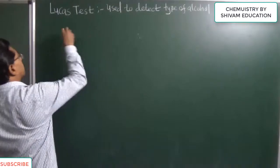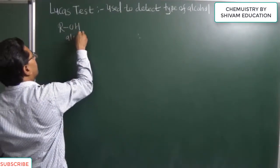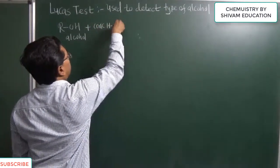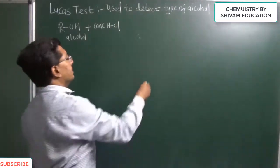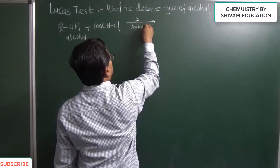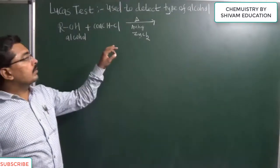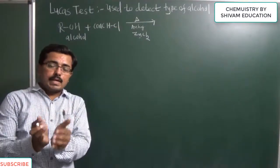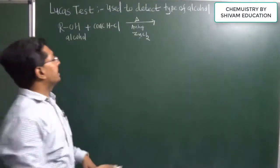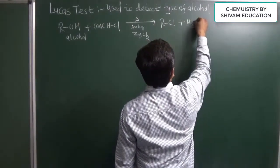Now in Lucas test, whatever alcohol given to us, this alcohol is allowed to react with concentrated hydrochloric acid in the presence of anhydrous zinc chloride. This concentrated hydrochloric acid and anhydrous ZnCl2 is known as Lucas reagent. We get alkyl halide and water molecules.